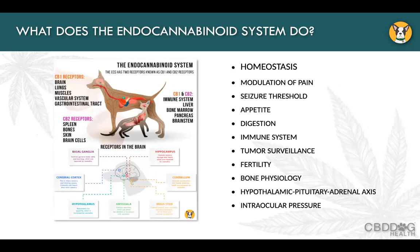The endocannabinoid system's main job is to help maintain homeostasis, and it does that in harmony with the immune system and the neurologic system. Using those two systems it can exert effects throughout the body. Some of the known effects are to help reduce or modulate pain, reduce the seizure threshold, and improve appetite and digestion.